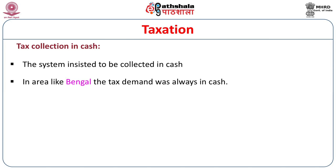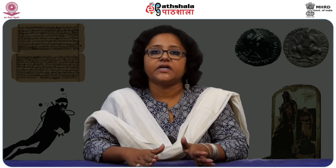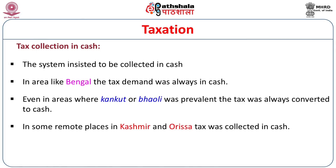There are certain areas in Bengal where the tax demand was always in cash. Areas which were remote from the center always preferred transactions in cash. Even in areas where Kankut or Bhavali was prevalent, the tax was converted to cash — the crop was collected in kind, then sold in the market and converted to a cash rate. In some remote places in Kashmir and Odisha, tax was also collected in cash.